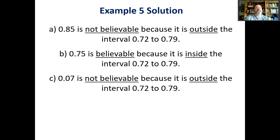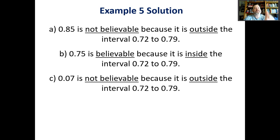We use confidence intervals to evaluate the believability of some unknown quantity. For example, if a candidate is winning at 52% with a margin of error of plus or minus 3%, it is believable they could lose the election because the interval from 49% to 55% contains 50%, meaning 50% is a plausible value — and to win you need more than 50%.